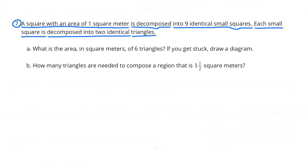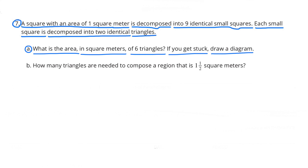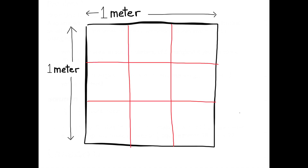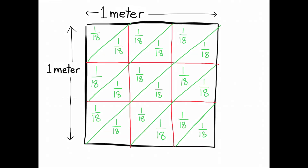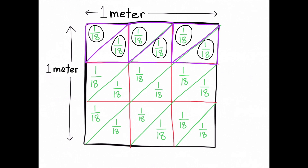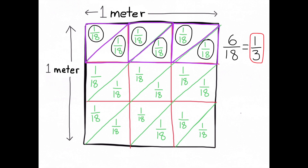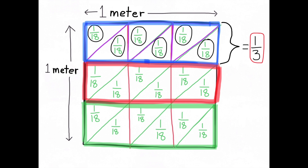Number 7: A square with an area of 1 square meter is decomposed into 9 identical small squares. Each small square is decomposed into 2 identical triangles. A: What is the area in square meters of 6 triangles? I'll draw a diagram starting with 1 square meter, then divide it equally into 9 squares — each square is 1 ninth of the meter. Next, cutting those squares into triangles makes each triangle 1 eighteenth of a meter, so there are 18 altogether. Taking 6 out of 18 gives 6 eighteenths, or 1 third. The area of 6 triangles is 1 third square meter.